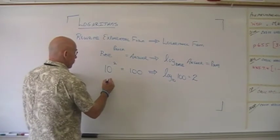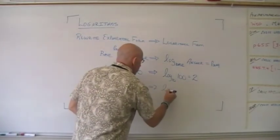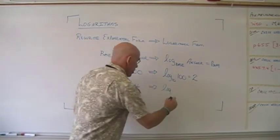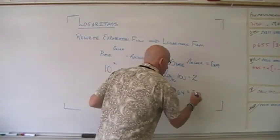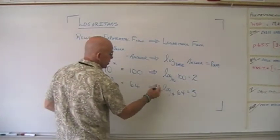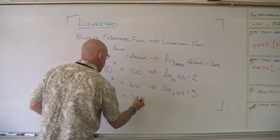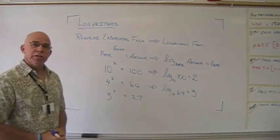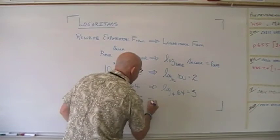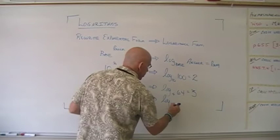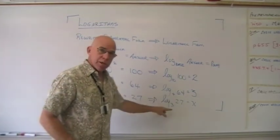Let's do one more example: 4 to the third power equals 64. We rewrite that as a log expression — what's the base, what's the answer, what's the power? We can also handle unknowns: if the exponent is a variable, like 3 to the x equals 27, we can rewrite it as log base 3 of 27, and that isolates the variable x.